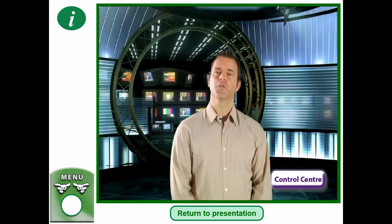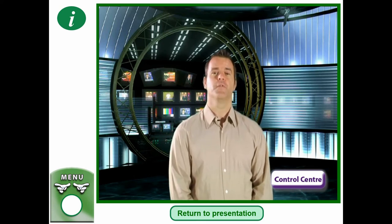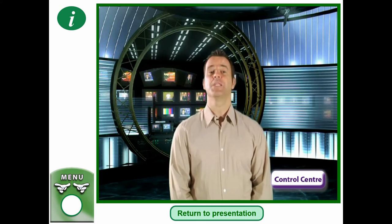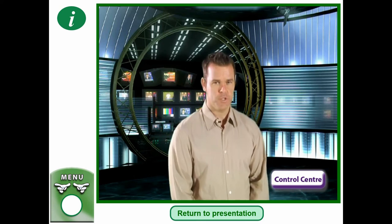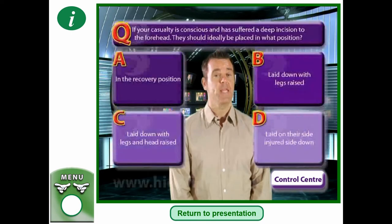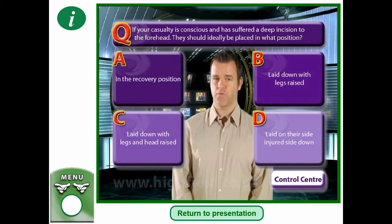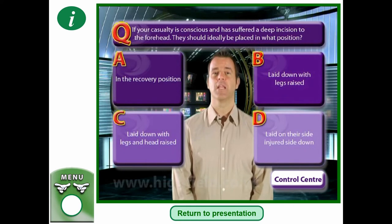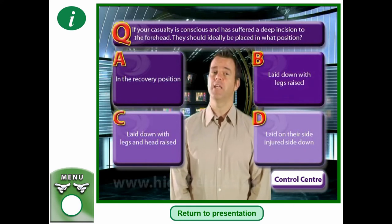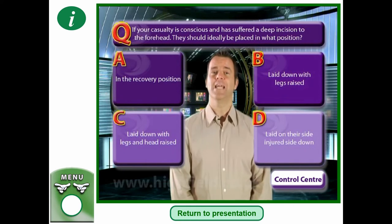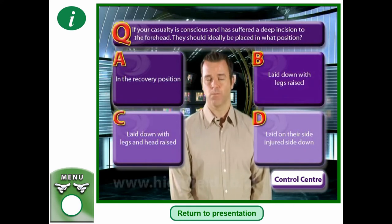If your casualty is conscious and has suffered a deep incision to the forehead, they should ideally be placed in what position? a) In the recovery position, b) laid down with legs raised, c) laid down with legs and head raised, or d) laid on their side, injured side down.